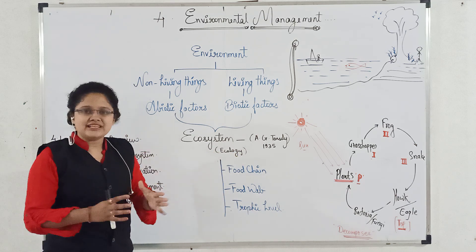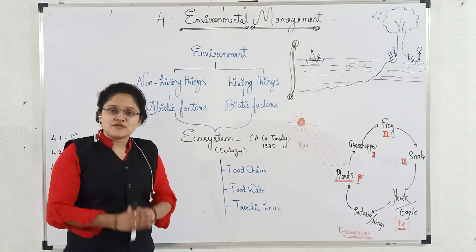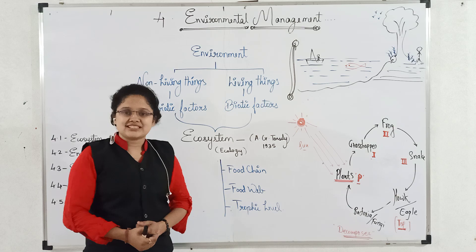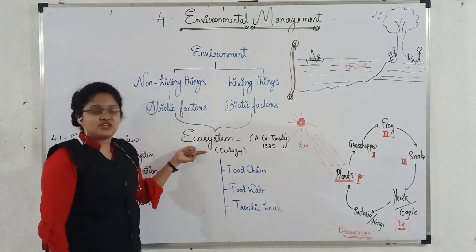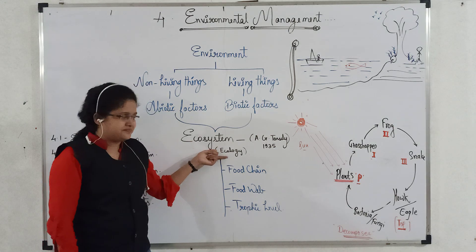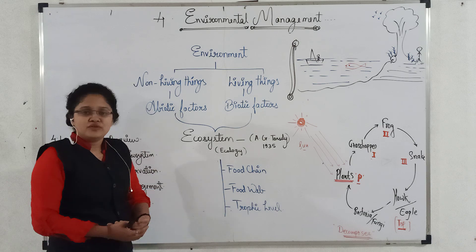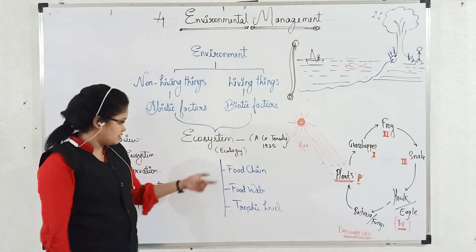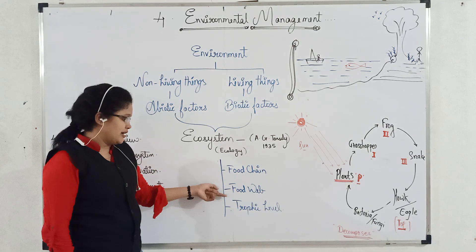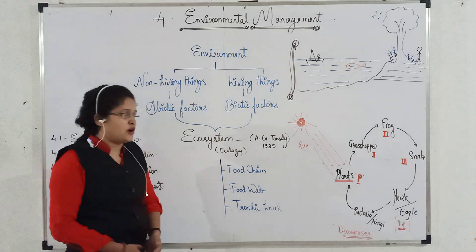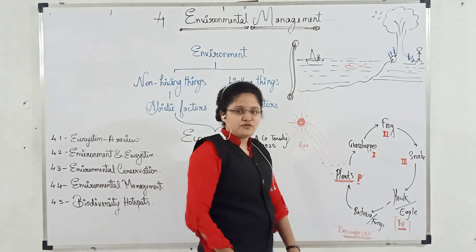What is meant by ecology? The branch of science which deals with the study of ecosystem is called as ecology. In ecosystem, we are going to learn a few points: food chain, food web, and trophic level, with the help of the diagram of the food chain.